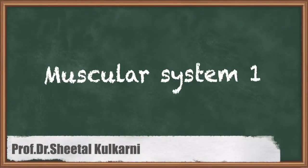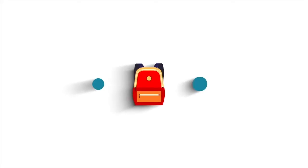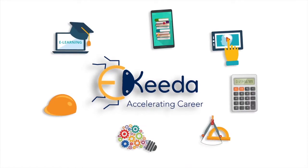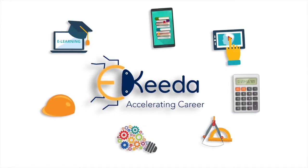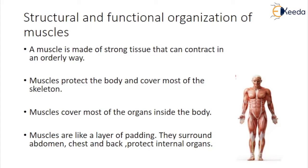Hello students, myself Dr. Sheetal Kulkarni and we are going to learn biomedical instrumentation unit 2 physiological systems and related measurement: muscular systems. A muscular system is an organ system consisting of skeletal, smooth, and cardiac muscles. It permits movement of the body, maintains posture, and circulates blood throughout the body. The muscular system in vertebrates is controlled through the nervous system, although some muscles can be completely autonomous.